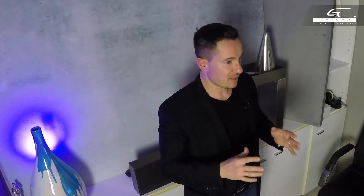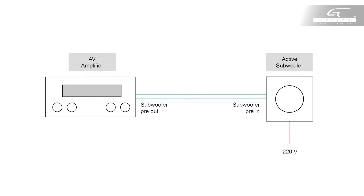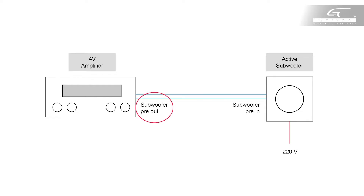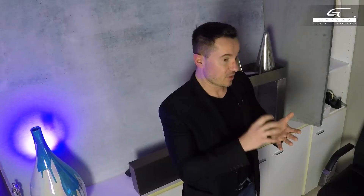Depending on the use, one type may be preferable over the other. The active subwoofer is the more traditional choice. For example, in a classic 5.1 system, we place the subwoofer next to the low cabinet under the TV. An active subwoofer needs a power outlet and the subwoofer signal to function. This signal is taken from the output of our audio-video amplifier, which is essentially the heart of the system — we go from the AV amplifier to the input of our powered subwoofer.